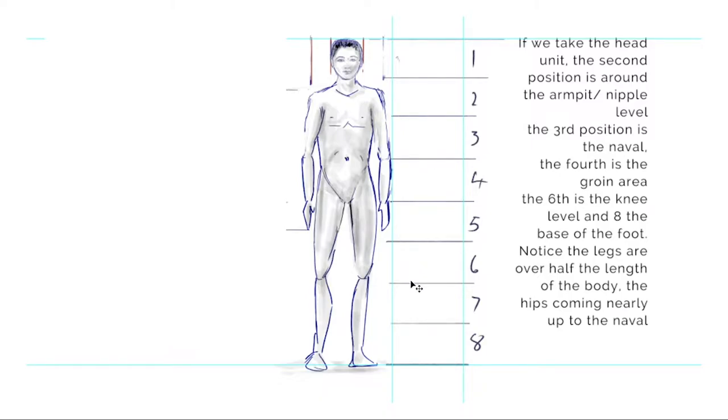The fifth, sixth, seventh and eighth are the legs. So the sixth position is the knee and the eighth is the bottom of the foot. Notice that the legs are over half the length of the body and the hips nearly come up to the navel.